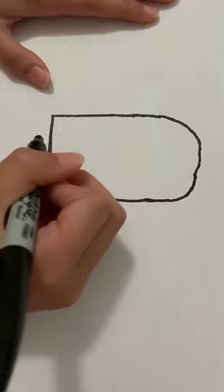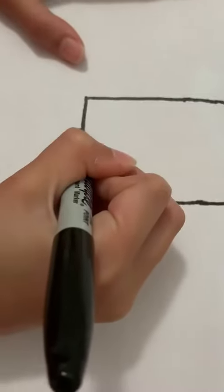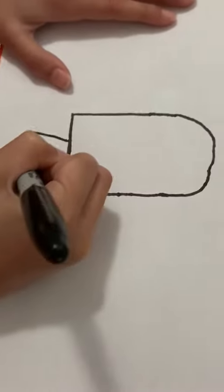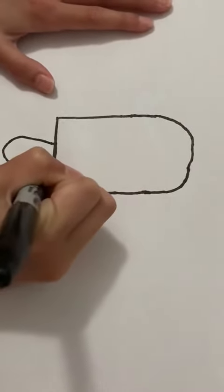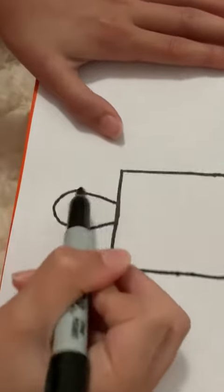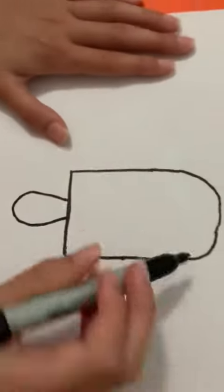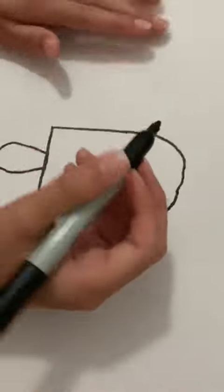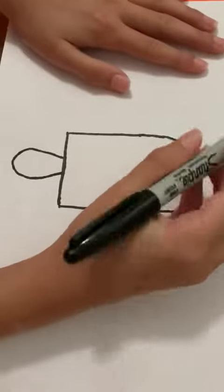So I'm going to draw the popsicle stick right now. My popsicle stick is going to be out like this. It's almost actually like the shape of this, except a little different. But we'll go with it.